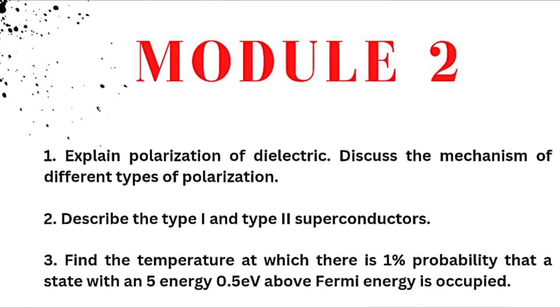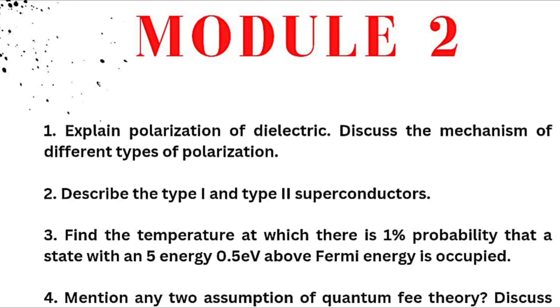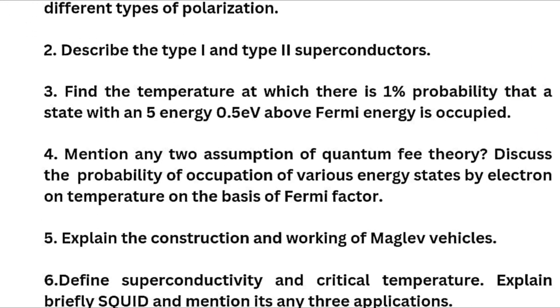Next we have module second. Explain polarization of dielectric. Discuss the mechanism of different types of polarization. And describe the type 1 and type 2 superconductors. And here we have another numerical that is find the temperature at which there is 1% probability that a state with an energy 0.5 electron volt. Next we have mentioned any two assumptions of quantum free electron theory. This is super important question. Discuss the probability of occupation of various energy states by electron on temperature on the basis of Fermi factor. And explain the construction and working of maglev vehicles.